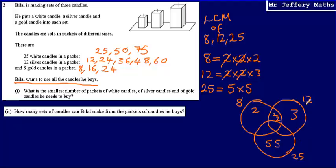Now the numbers that I've got in my Venn diagram, if I multiply them together, that will tell me what the lowest common multiple is. So these numbers multiply together: 2 times 2 times 2 times 3 times 5 times 5. So what I can say is that my lowest common multiple is going to be 2 times 2 times 2 times 3 times 5 times 5, and this comes to 600.